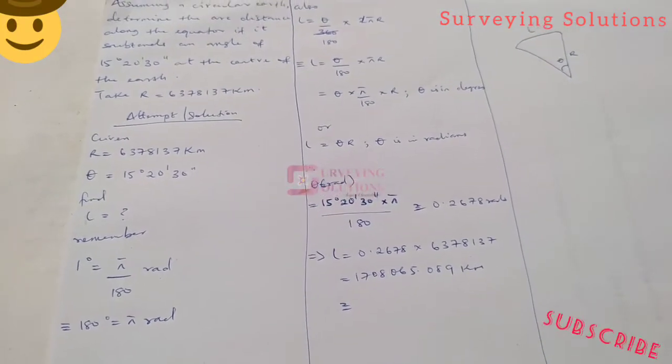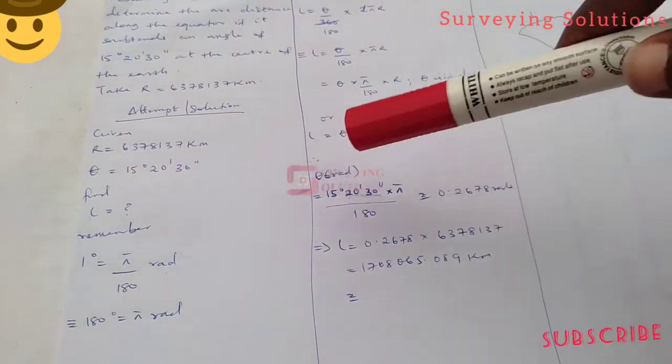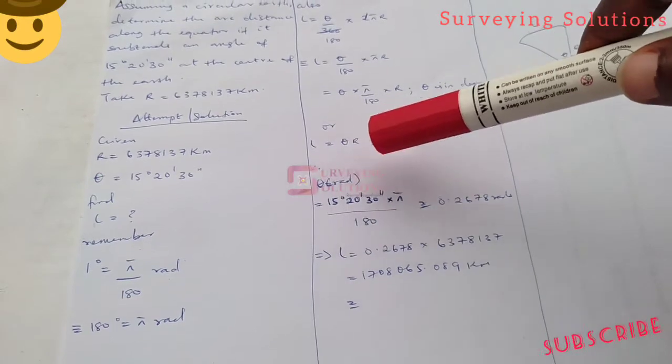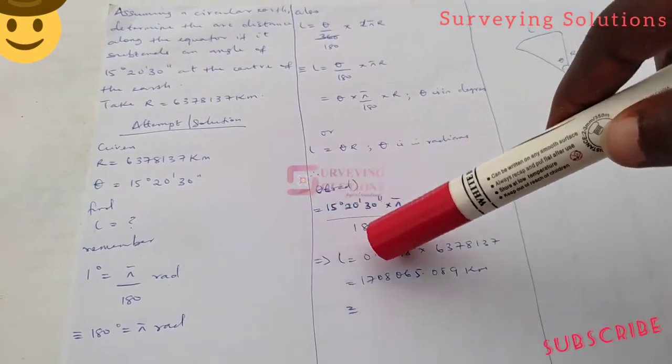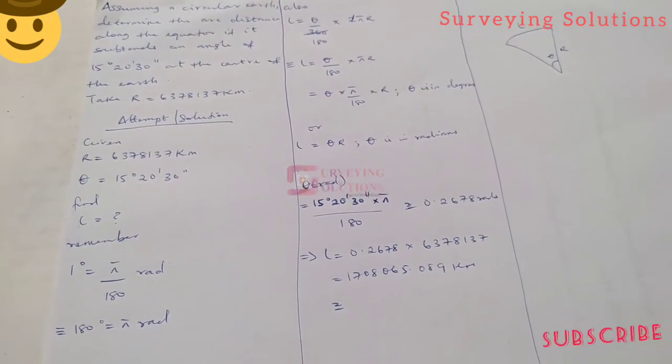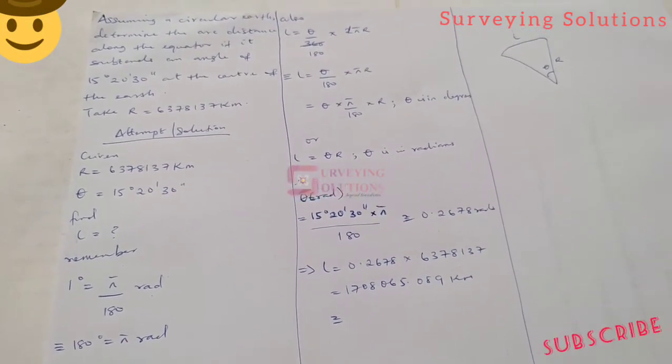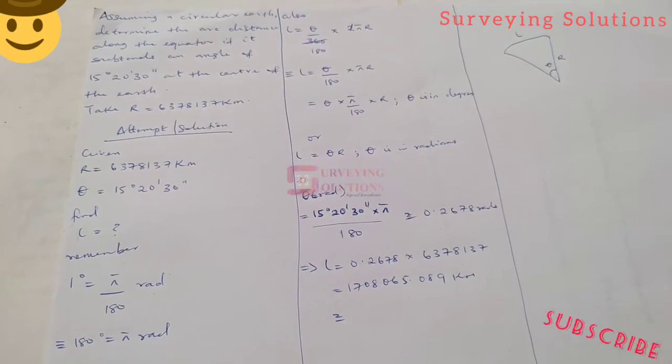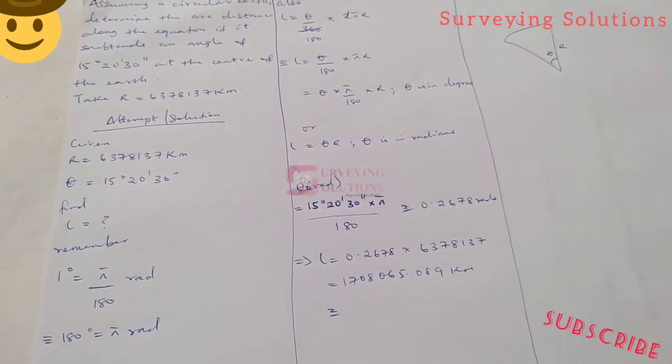We have 15°20'30" times π over 180. When you do that on your calculator you should have 0.267777, which we approximated to 0.2678 radians.